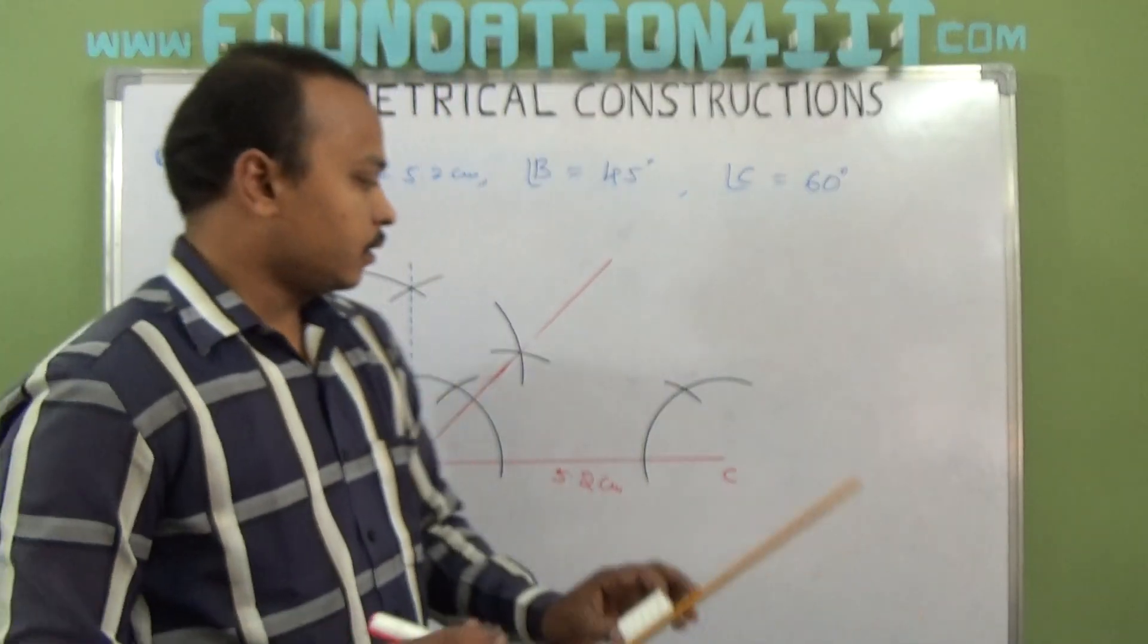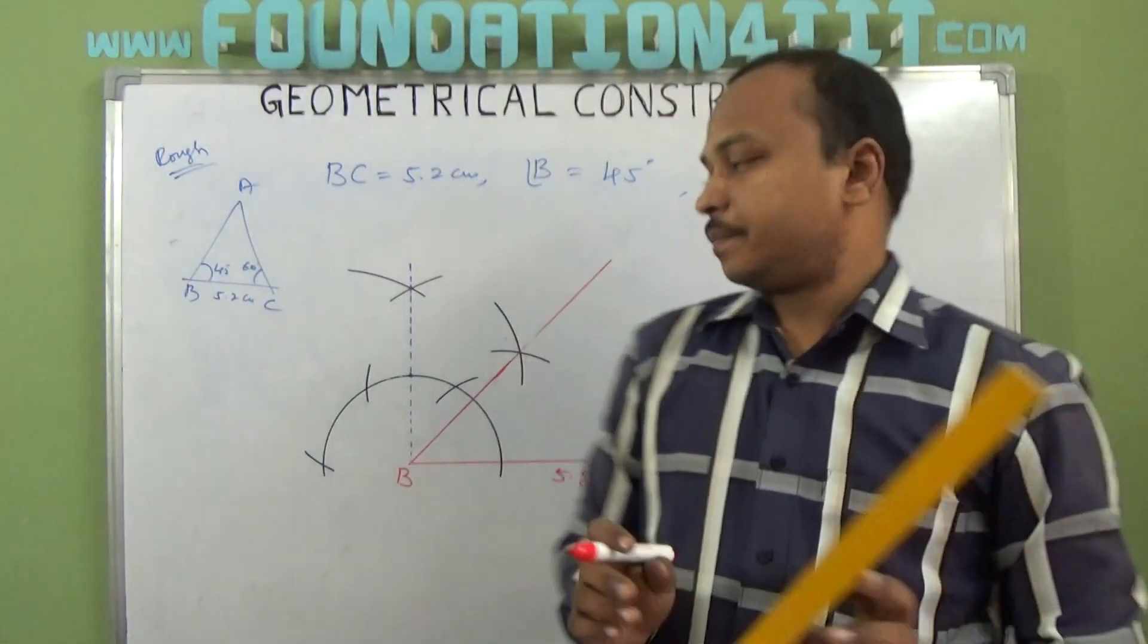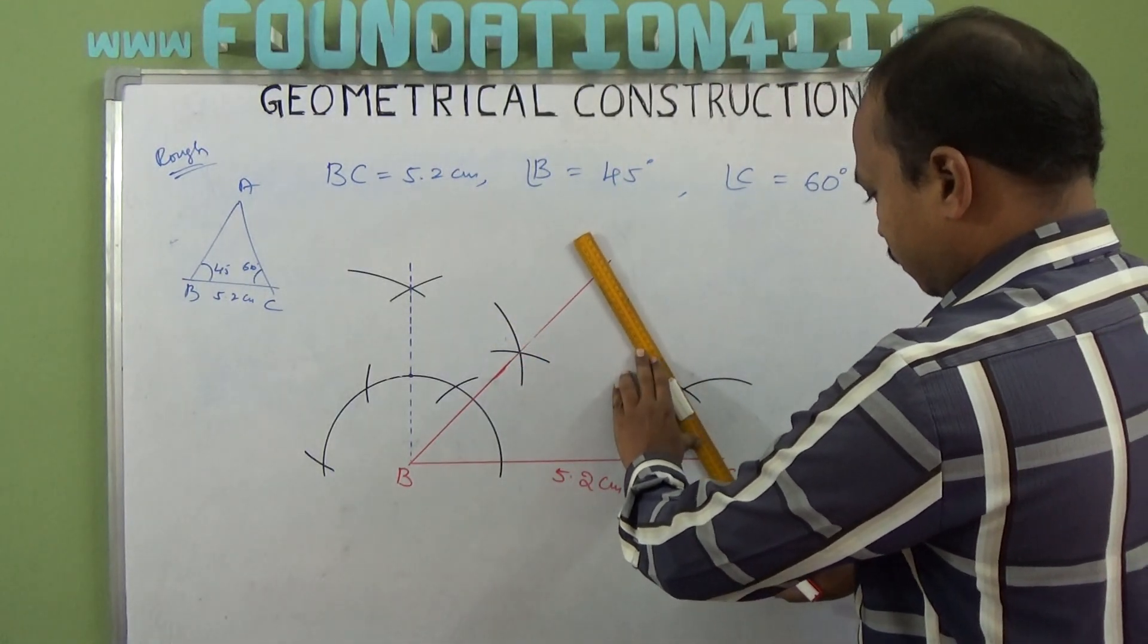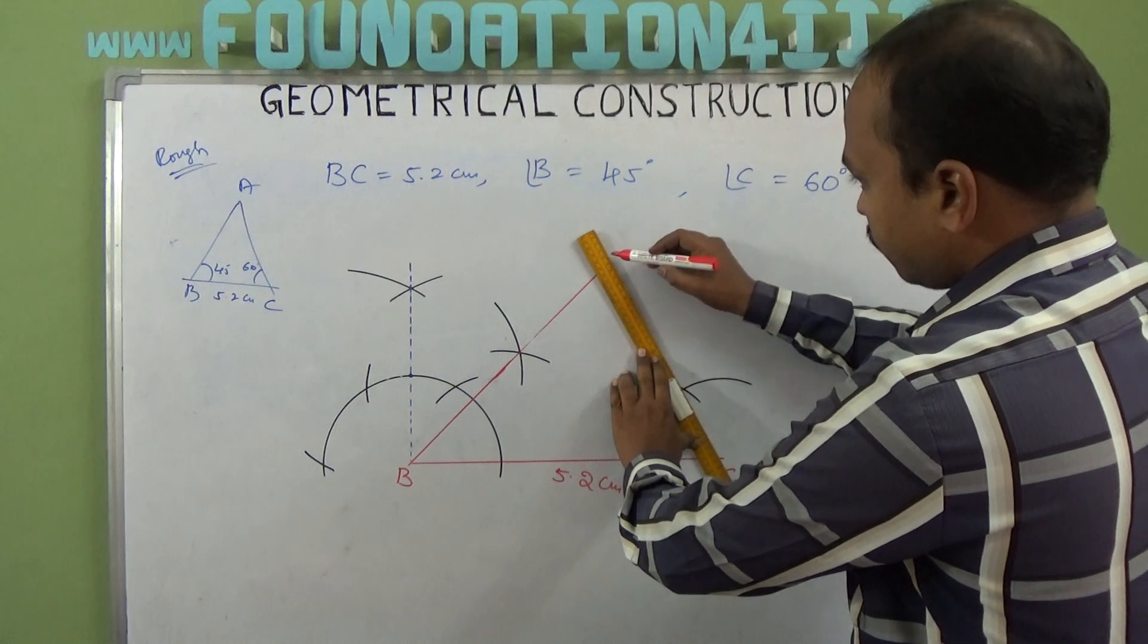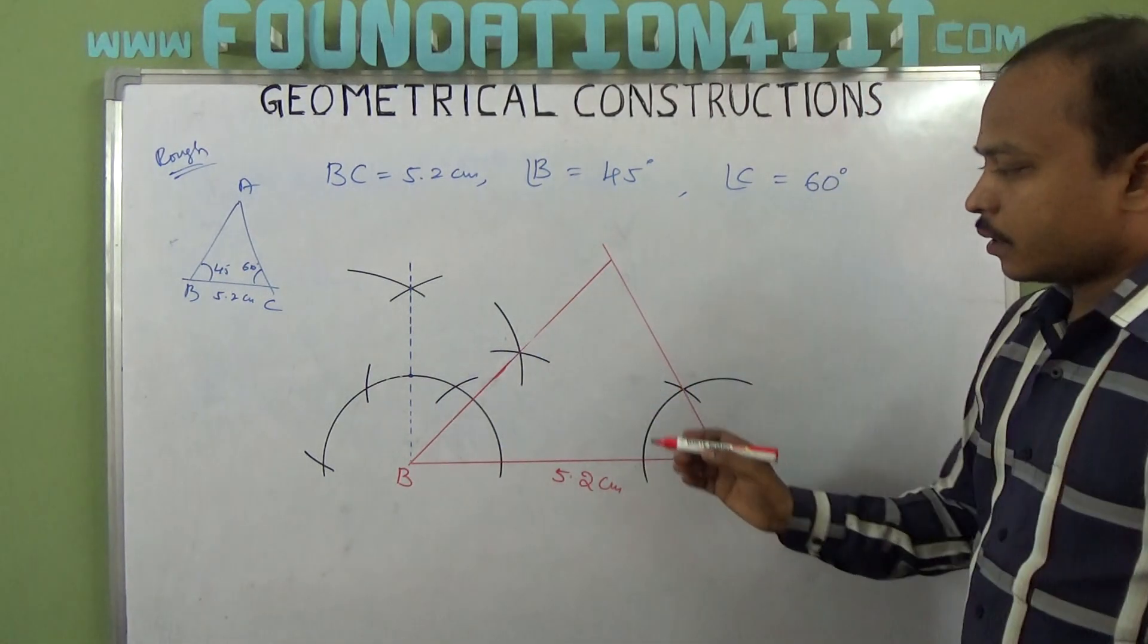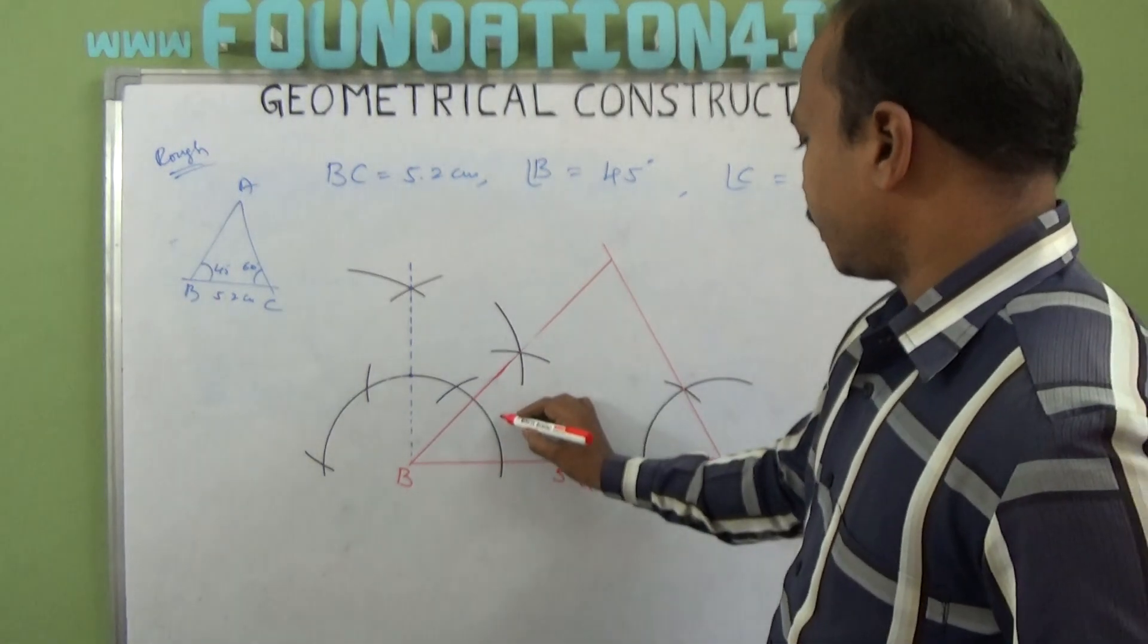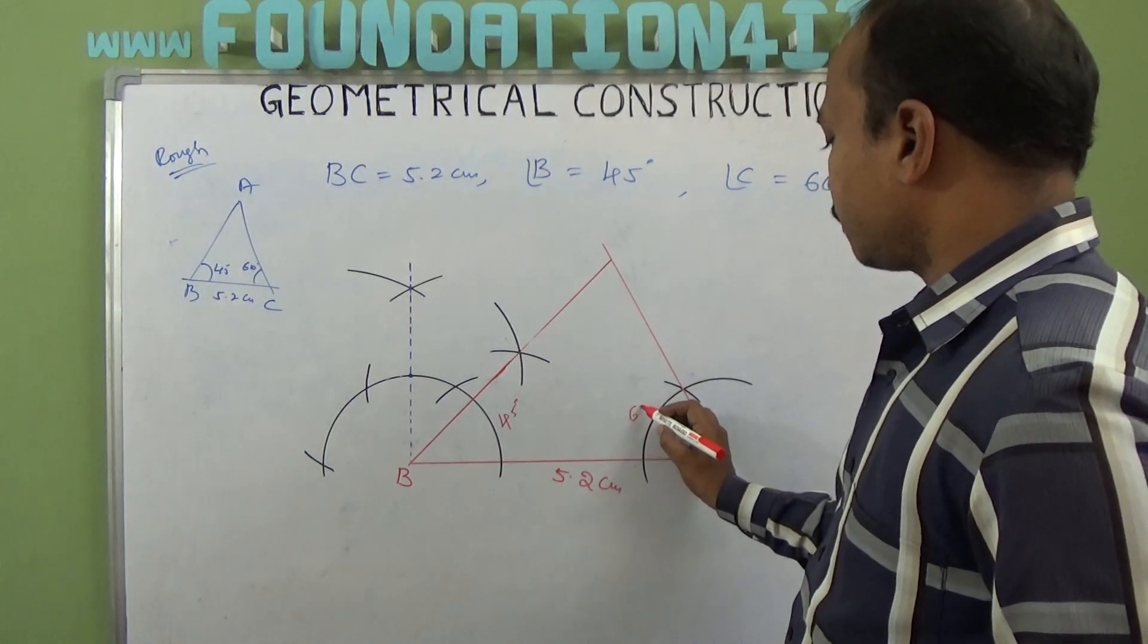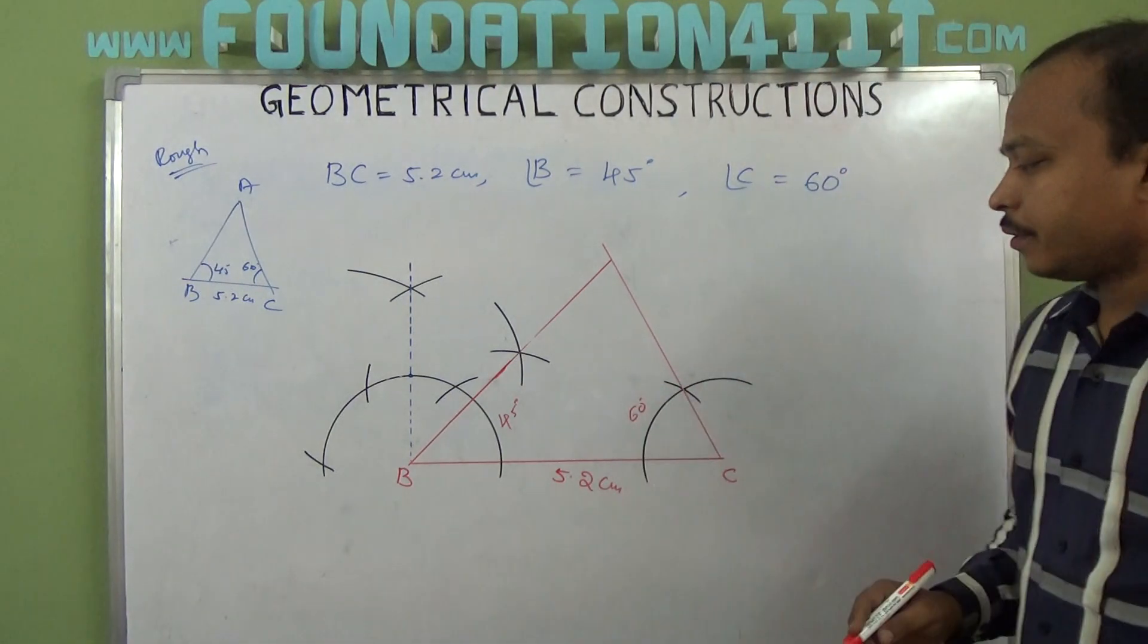We need to construct that angle at point C. Now join this line. So we have 45 degrees at B and 60 degrees at C.